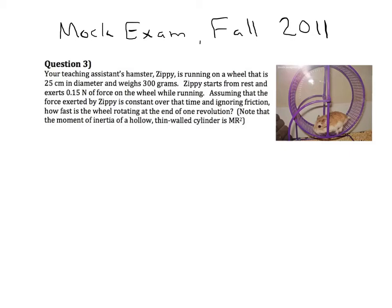Today we're going to work through a problem from the mock exam from fall 2011. Your teaching assistant's hamster, Zippy, is running on a wheel that's 25 centimeters in diameter and weighs 300 grams. Zippy starts from rest and exerts 0.15 newtons of force on the wheel while running. Assuming the force exerted is constant over time and that you can ignore friction, how fast is the wheel rotating at the end of one revolution?